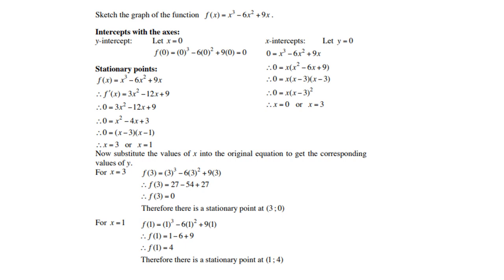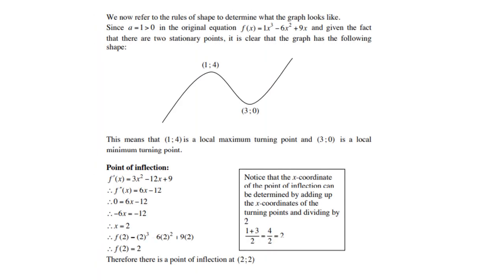Then find the stationary points using the first derivative. Let the derivative equal zero, factorize, and get the two x-values. Substitute x = 1 and x = 3 into the original function to get the corresponding y-values. One turning point is (3, 0) and the other is (1, 4). Since a = 1, which is greater than zero, we expect two stationary points. This means (1, 4) is the local maximum and (3, 0) is the local minimum.